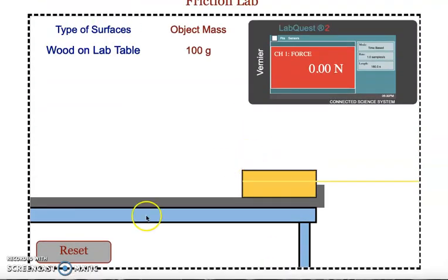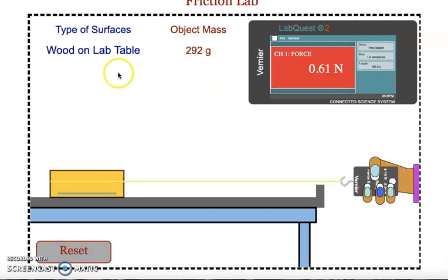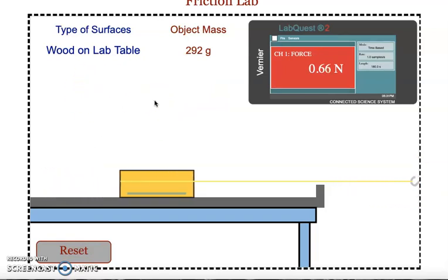In order to take another data point you would hit the reset button. You would then be able to toggle to a new mass value, hit start, and it would repeat again and you'd be able to take more data.